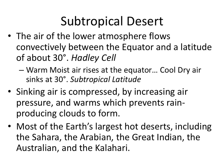The first one is the subtropical desert. I think the easiest way would be to do a little sketching. So we'll come back to this page of notes — sometimes a picture is worth a thousand words. The air of the lower atmosphere flows convectively between the equator and the latitude of about 30 degrees. This is what we call the Hadley cell.